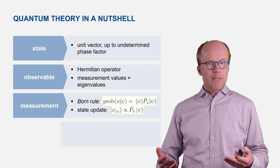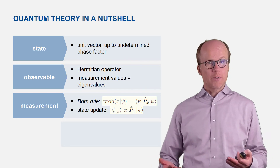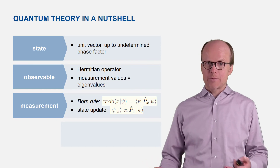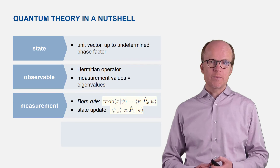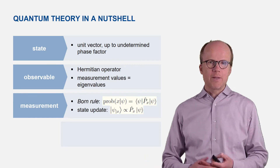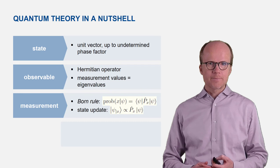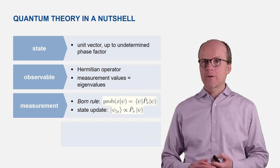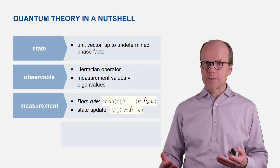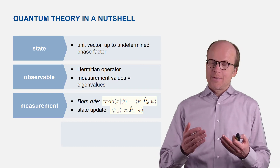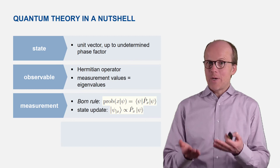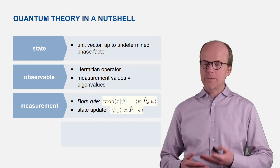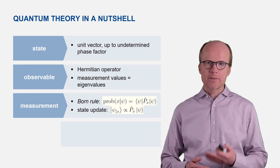This explains, for example, why the order of measurements matters — that was one of the characteristic features of quantum theory we encountered in the previous lecture. Whenever you perform a measurement you actually change the state of your system, and it makes a difference whether you change the state one way or the other way around. This is the starting point for describing that mathematically.